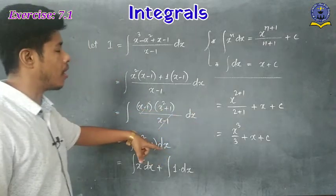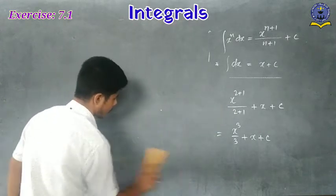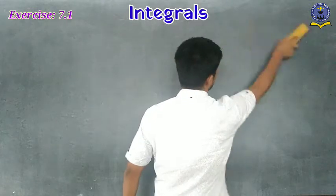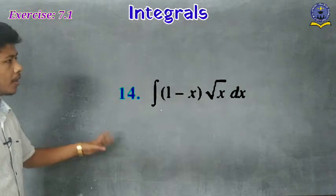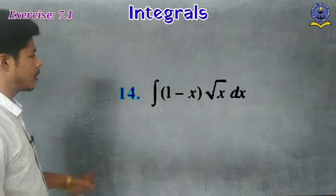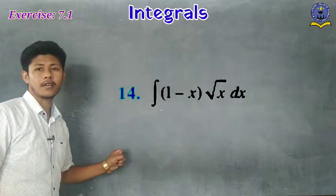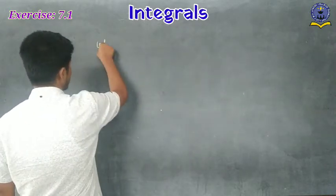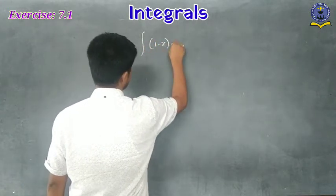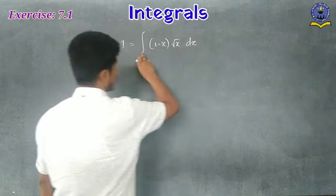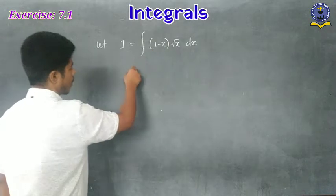Now we move to Question 14. The question is: integration of (1 - x)√x dx. Let I equals the integral of (1 - x)√x dx. These two are given in multiplication form, so we need to multiply and convert to a general polynomial form.